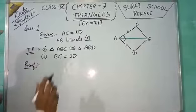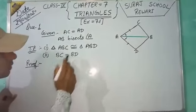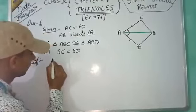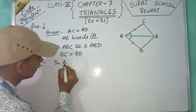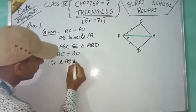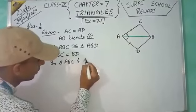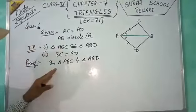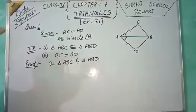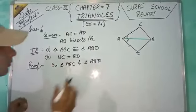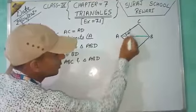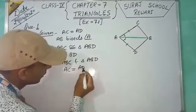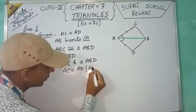Now, proof. Let us consider two triangles ABC and triangle ABD. In triangle ABC and triangle ABD, first of all, we have given that side AC is equal to AD. Reason: given.